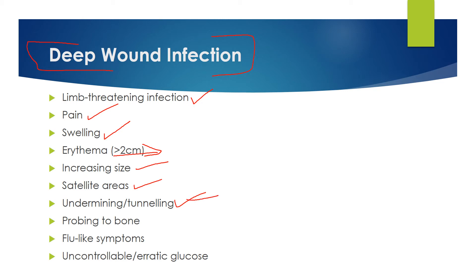Undermining and tunneling. Undermining is when there's a wound and then you can almost peel up the skin and feel on the wound, and tunneling is similar but more of a tunnel shape than a lifting of the skin around the wound.